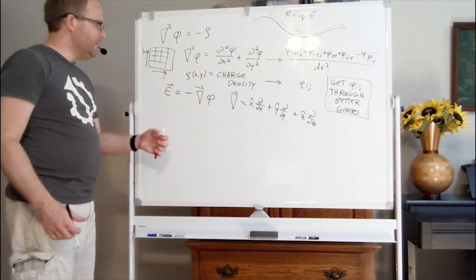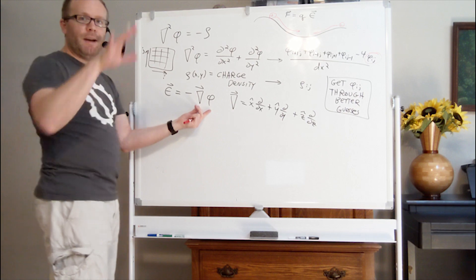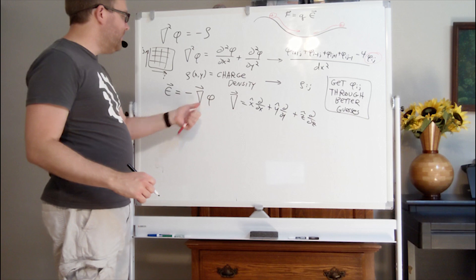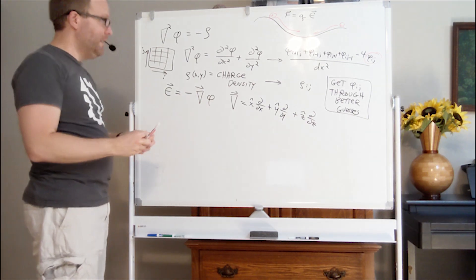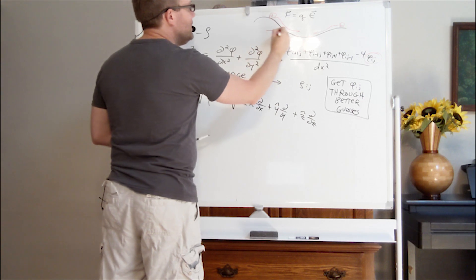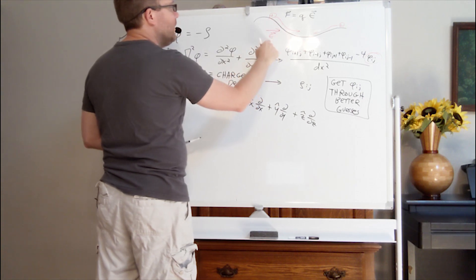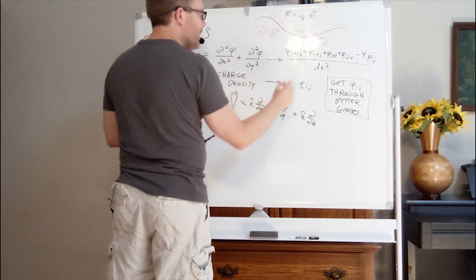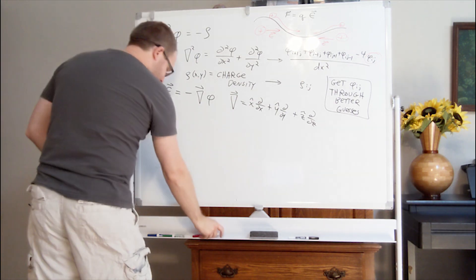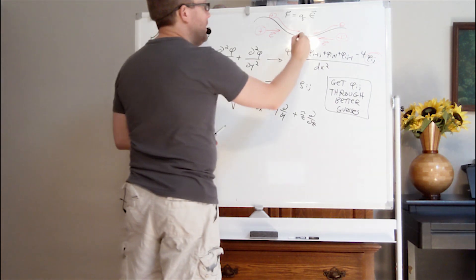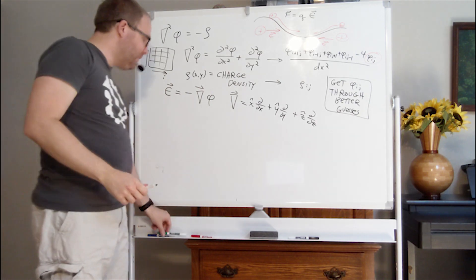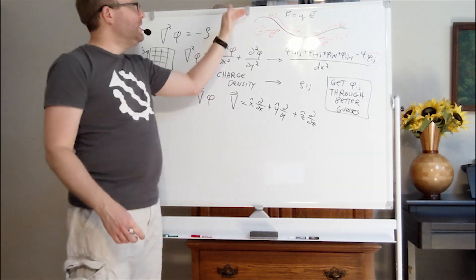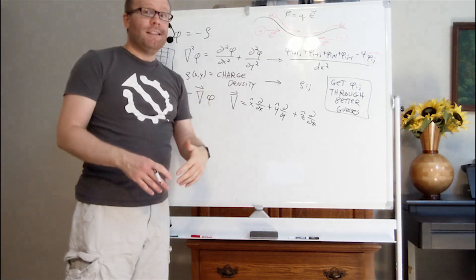You probably learned in your calculus class that the gradient tells you the direction of maximum slope — it tells you which way is going uphill for a function. Since this is the negative gradient, it's going to tell you what direction is going downhill. So the electric field is always going to point downhill. Now, over here there must be a region of positive charge, and in this region there must be an area of negative charge. This basically tells you what you learn in freshman physics: electric fields point from positive charges into negative charges.